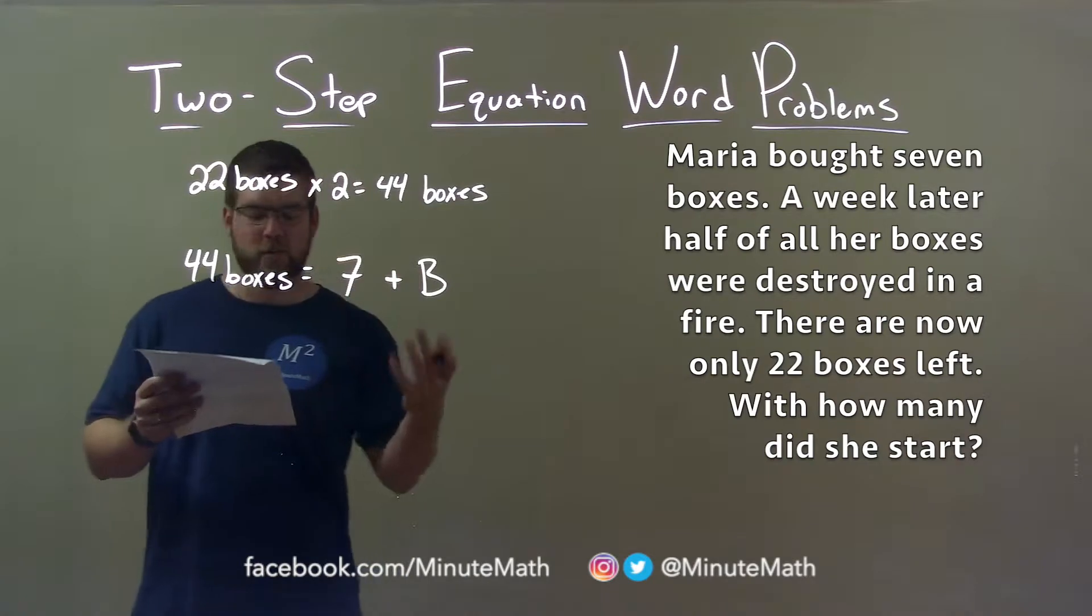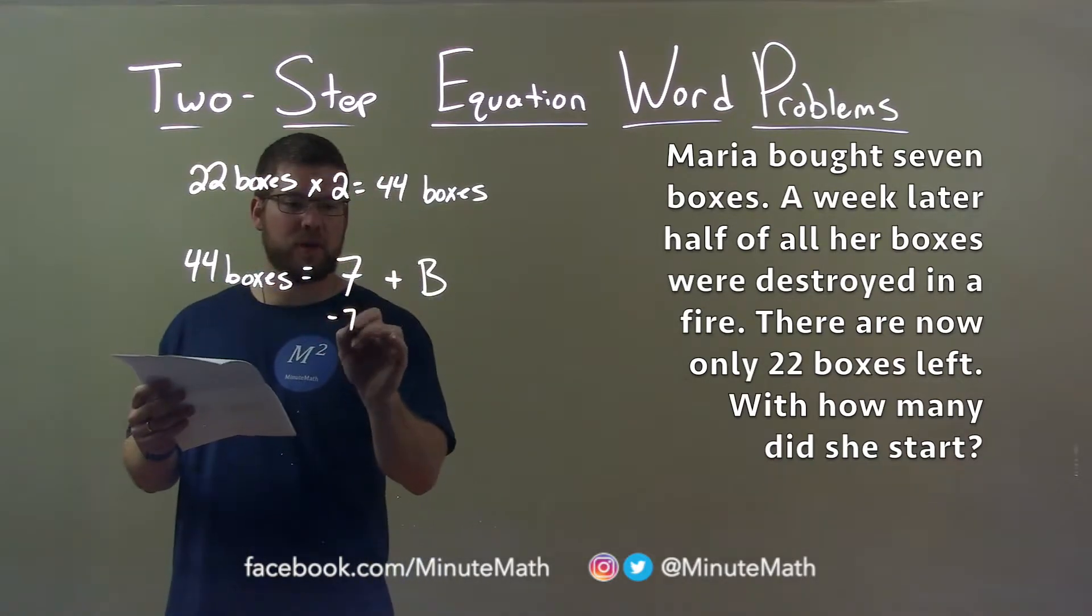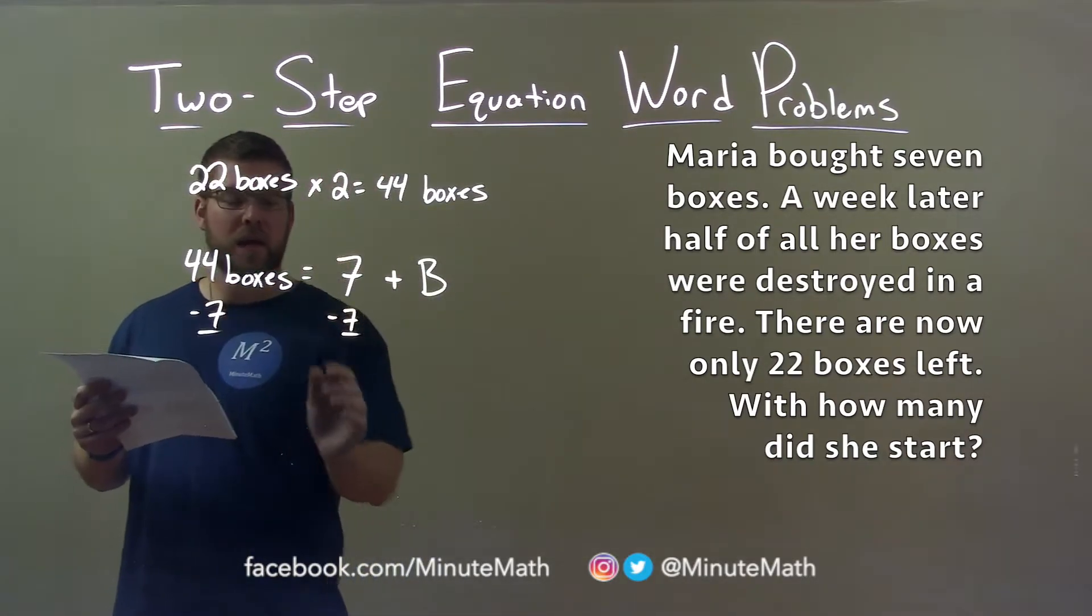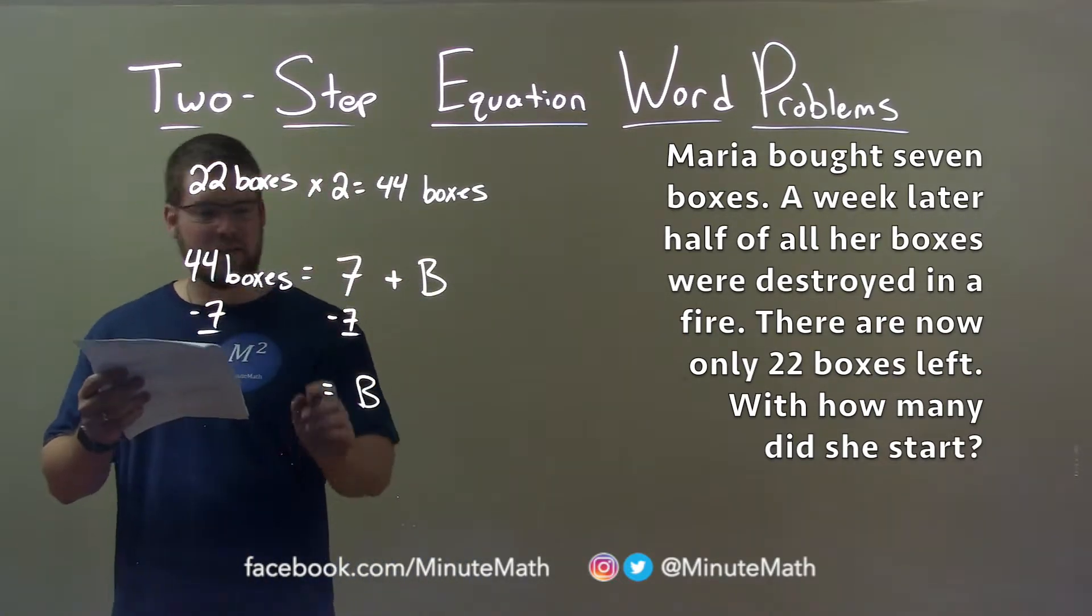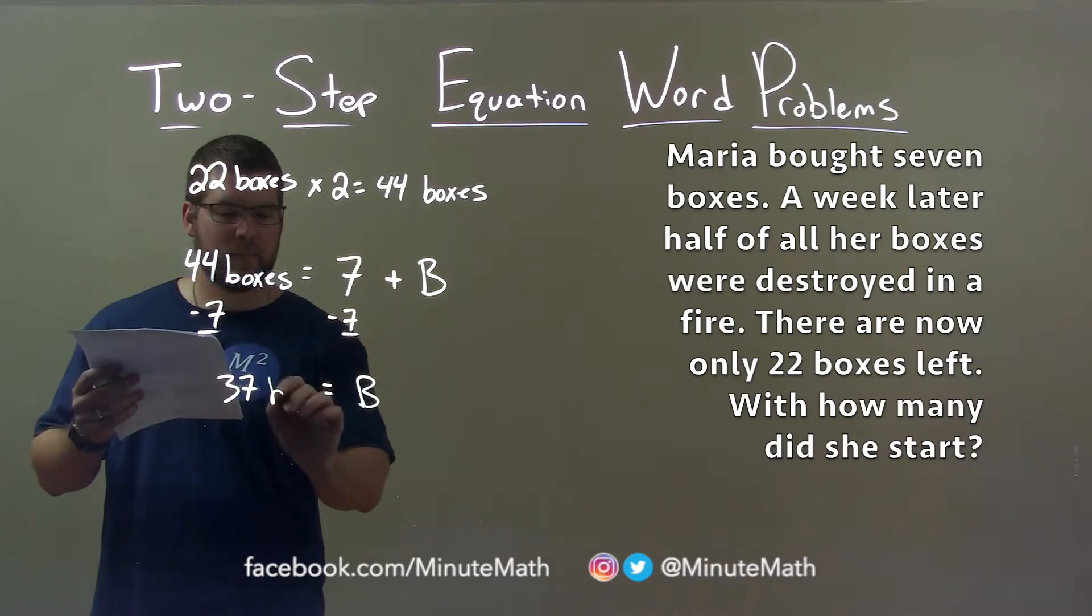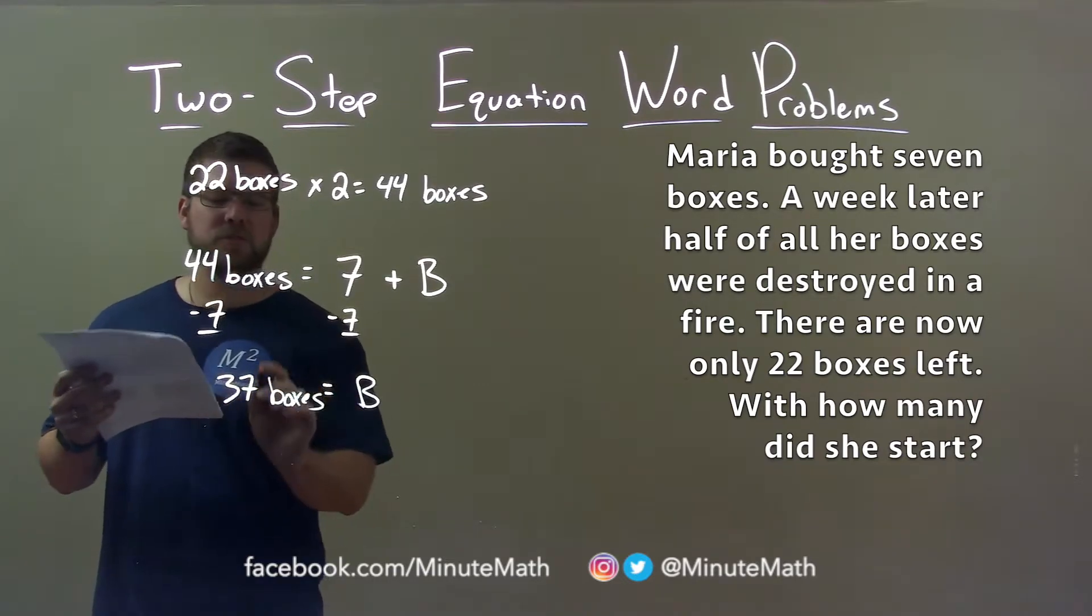Now we want to solve for B. It's easy now. We just subtract seven on both sides, and we're left with B being the number of boxes she started with. 44 minus seven is 37, so we have 37 boxes she started with.